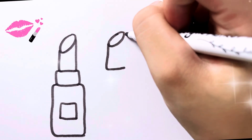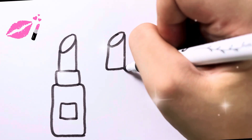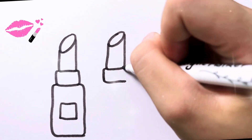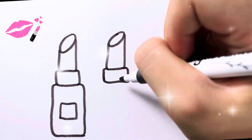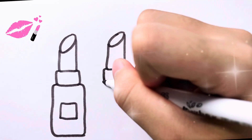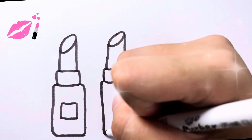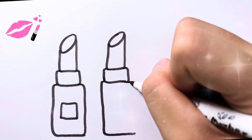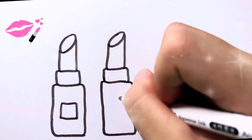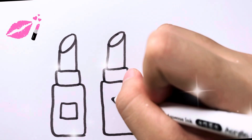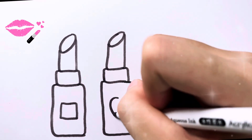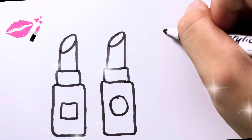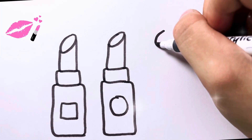A, B, C, D, E, F, G, H, I, J, K, L, M, N, O, P, Q, R, S, T, U, V, W, X, Y, and Z. Now I know my ABCs, next time won't you sing with me?